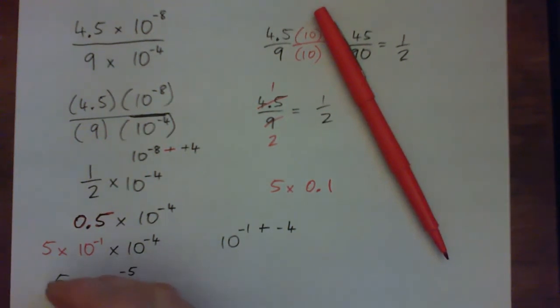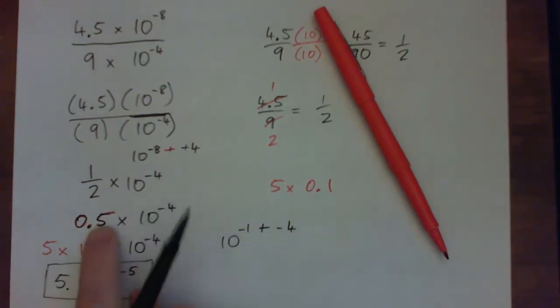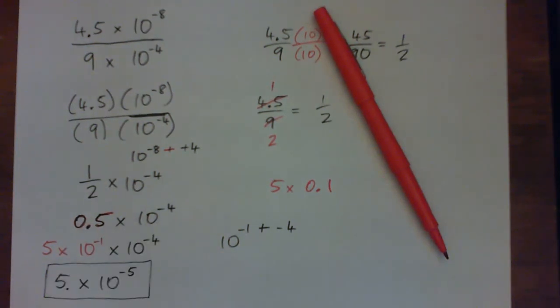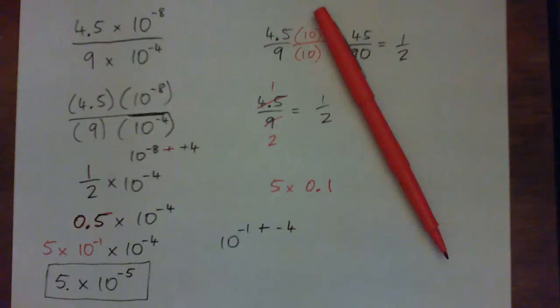But that is now in scientific notation because we have a digit in the unit spot. And it's not in scientific notation here because we have a 0 in the unit spot and that's not considered scientific notation.